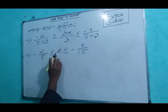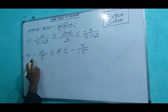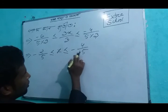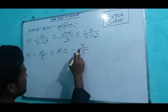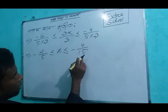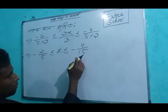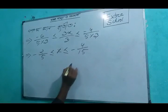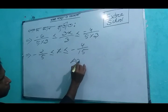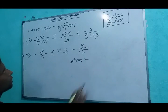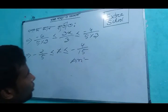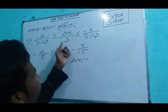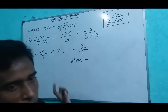So the final result: minus 2 by 5, less than or equal to x, less than or equal to minus 4 by 5. And then minus 1 by 5, minus 3 by 5, minus 2 by 1 by 5. This is the next step.